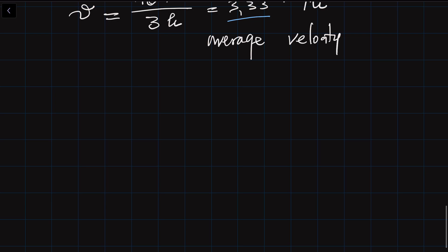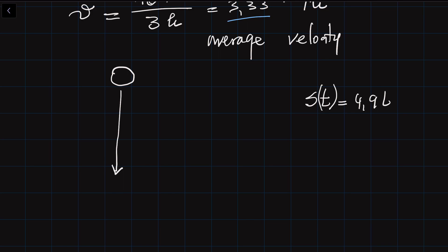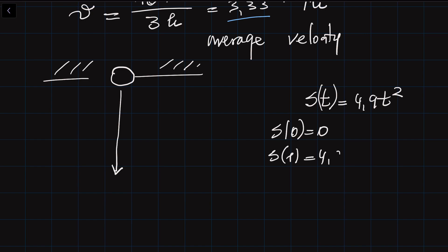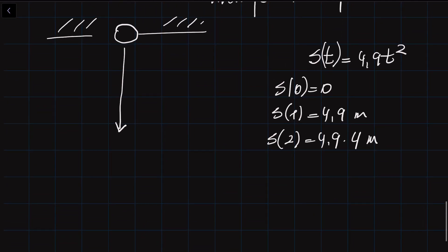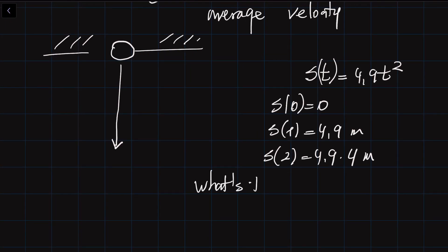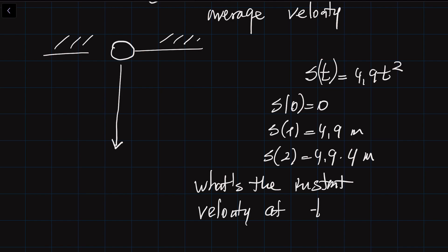Let's do a problem. Say you drop a ball from a tower with height 440 meters. You can figure out the distance carried by this ball at every instant using the formula S equals 4.9T squared. At T equals 0, S equals 0. After one second, the ball covers 4.9 meters. After two seconds, it covers 4.9 times 4 meters. What I want to know is the instant velocity at exactly T equals 5 seconds.